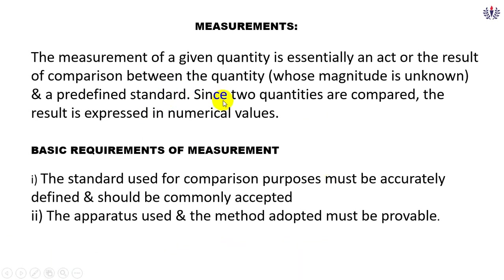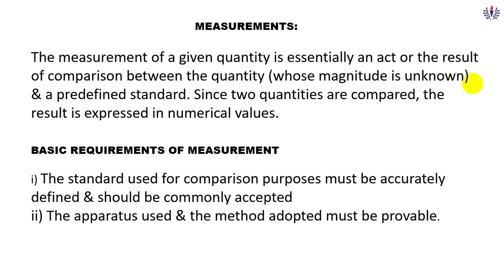The measurement of a given quantity is an act or the result of comparison between the quantity and a predefined standard. For example, kilogram is a standard — when you go to a market, vegetables or rice are measured in kilograms. Both the standard and the measured quantity are compared to get a numerical value.